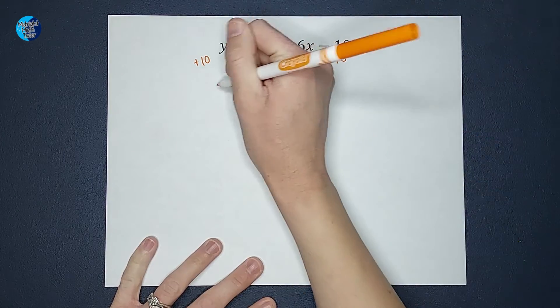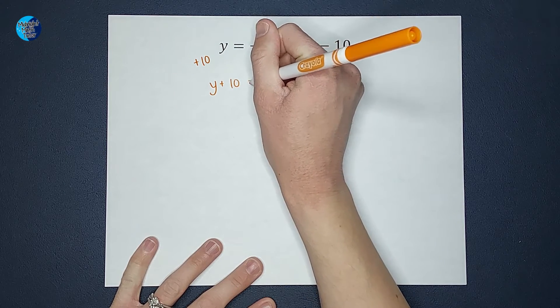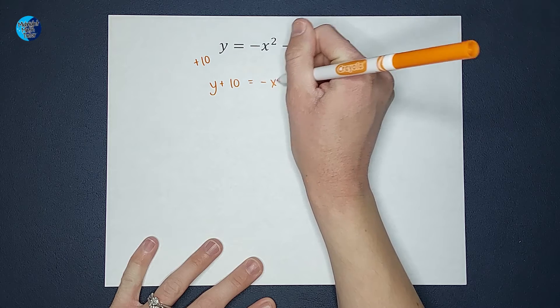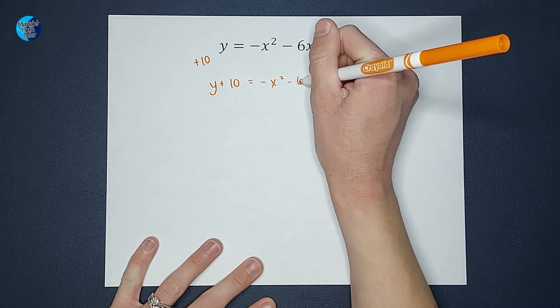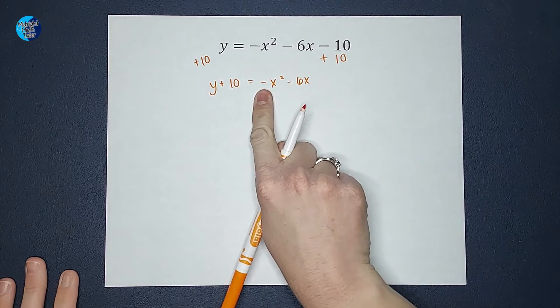When I do that, I end up with y plus 10 over here and negative x squared minus 6x over here. Now this is the first place where it's a little different because of that negative.